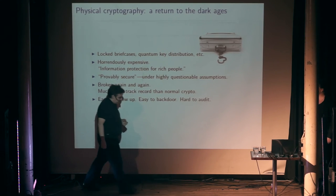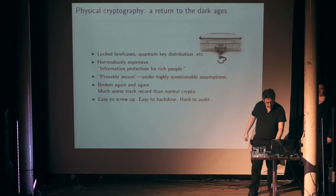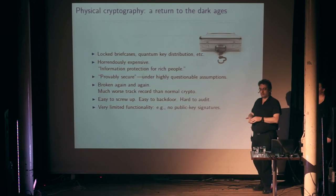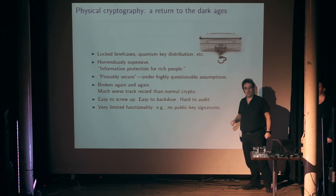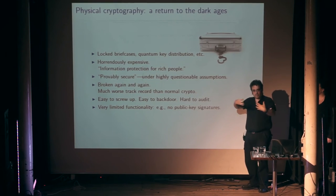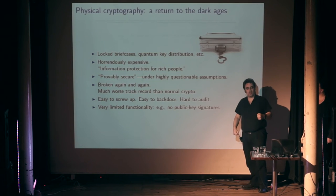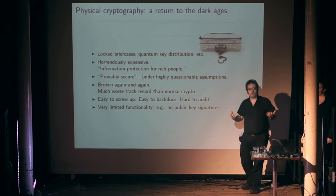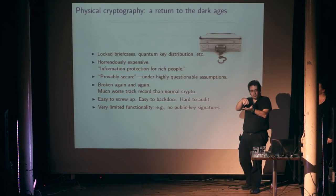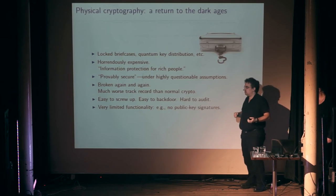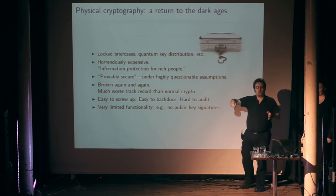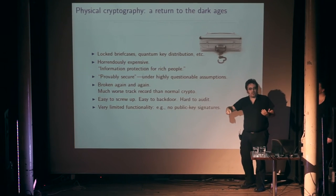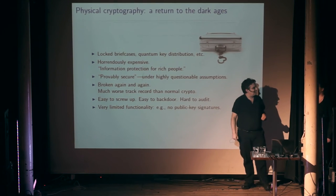These physical cryptographic techniques have a really bad track record of being compromised. And even if physical cryptography actually did everything it was supposed to do, and even if we were somehow magically confident in the security, it wouldn't do basic stuff that we need like public key signatures. It really only works if you've already set up some sort of trusted communication mechanism with someone and then you want to exchange messages. It doesn't let you do things like operating system updates, where you download a new version of your operating system and your smartphone checks a signature on that to make sure it's valid. Imagine Microsoft sending out billions of couriers with locked briefcases so that each of you could receive your OS update — it just doesn't work.